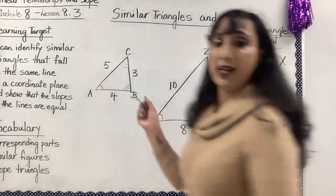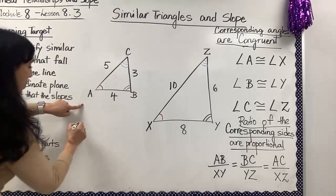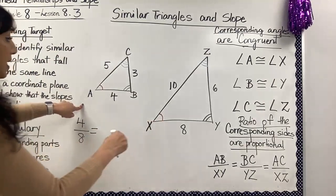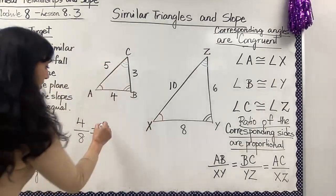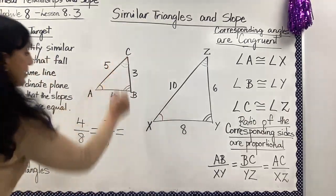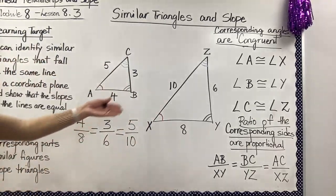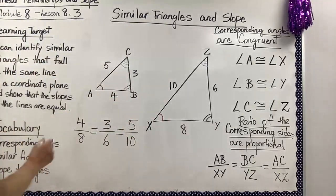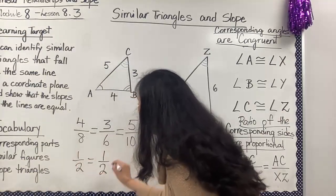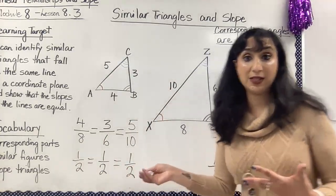We can write this as: AB is 4 over XY which is 8, equals BC which is 3 over YZ which is 6, equals AC which is 5 over XZ which is 10. Simplifying all of these, we get one half equals one half equals one half.